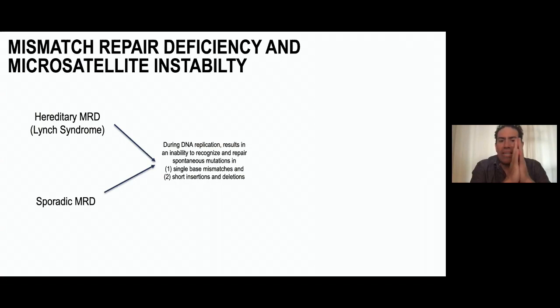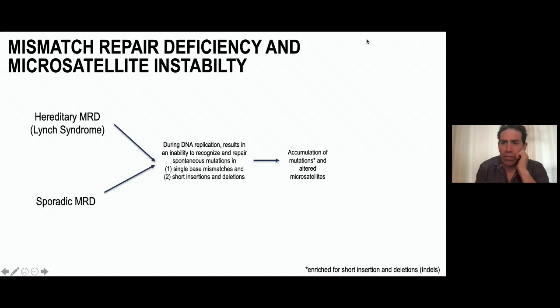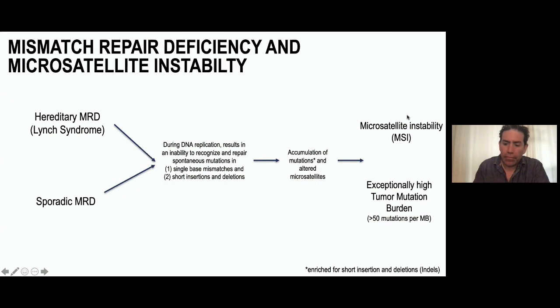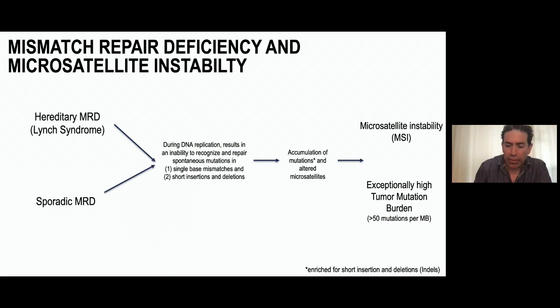When a cell has DNA replication errors and mismatch repair deficiency, it cannot recognize and repair spontaneous mutations, single-base mismatches, and short insertions and deletions. There is accumulation of these mutations and altered microsatellite changes, leading to microsatellite instability and an exceptionally high mutational burden — typically more than 50 mutations per megabase. The type of mutations accumulated are predominantly insertions and deletions, which is important for understanding the mechanism of action.